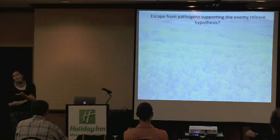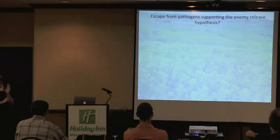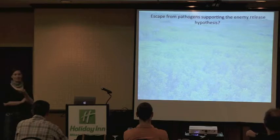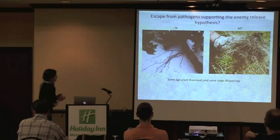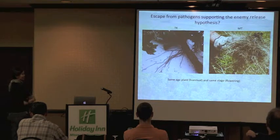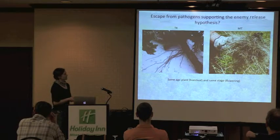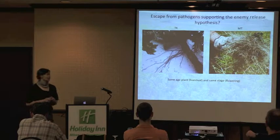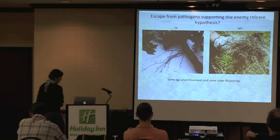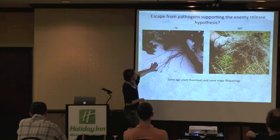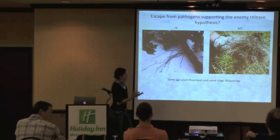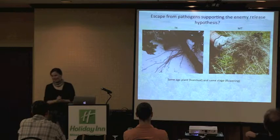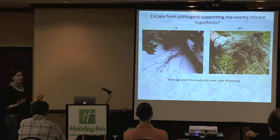One very popular hypothesis in invasion biology is the enemy release hypothesis — that exotic plants become invasive because they escape their natural enemies like herbivores or pathogens in their introduced range. Just looking at the roots, it's hard not to believe that could explain the increased growth we see in Montana. These are biennial plants collected at flowering — two years old. The roots in Turkey show fewer and blackened roots, whereas in Montana they're white, numerous, and really healthy looking.